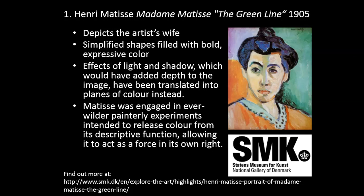This brings us to the first painting — the first question on the test we've already looked at — which addresses Henri Matisse's Madame Matisse, The Green Line, painted in 1905. It depicts Matisse's wife, and simplified shapes filled with bold, expressive color make up where you might normally see light and shadow. The effects of light and shadow, which would have added depth to the image, have been translated into planes of color instead.